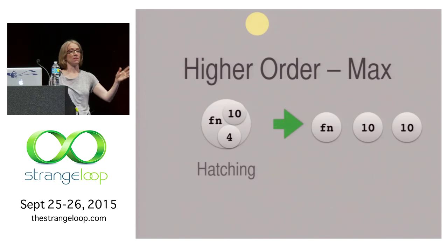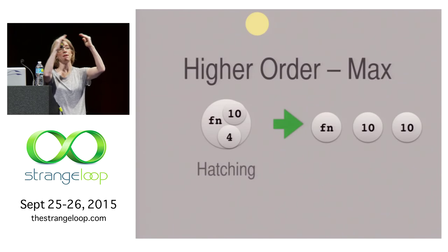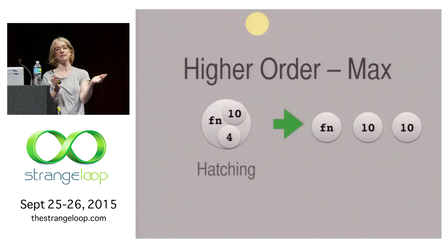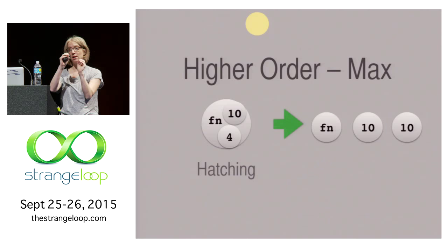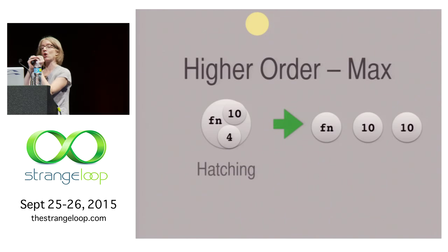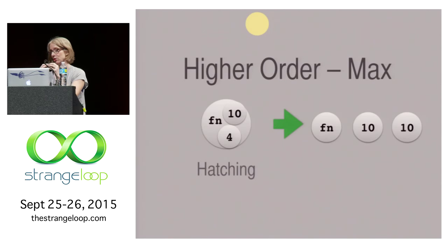Let's see an example of this. If you have a function molecule that has the max higher order, and you capture a 10 and a four, then it's going to go ahead and hatch, and it's going to have the original function, which is the max function, and then two 10s.